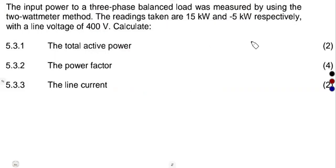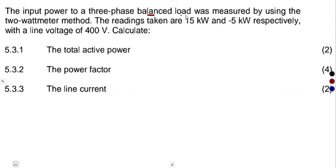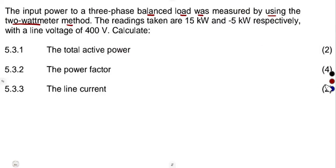They were given the input to a three-phase balanced load was measured by using the two wattmeter method. The readings taken are two readings respectively with a line voltage of 400 volts. So according to these readings, you are going to take the power in your way, according to the way that you want.